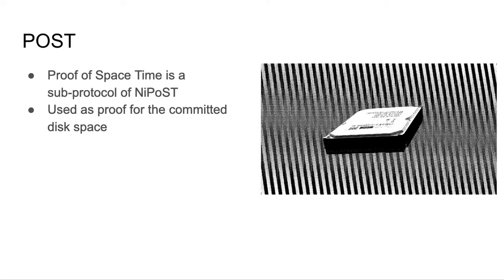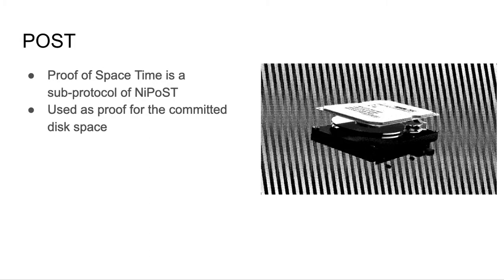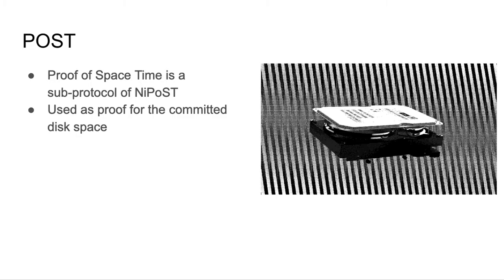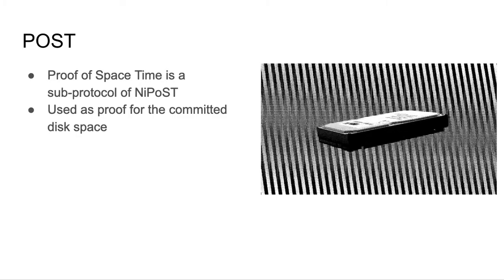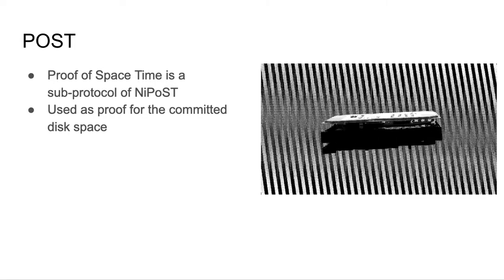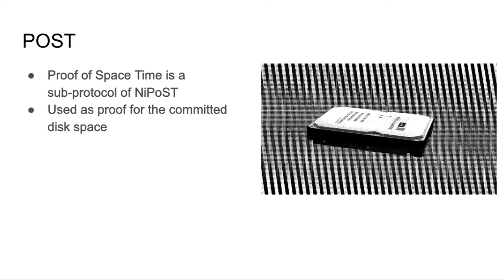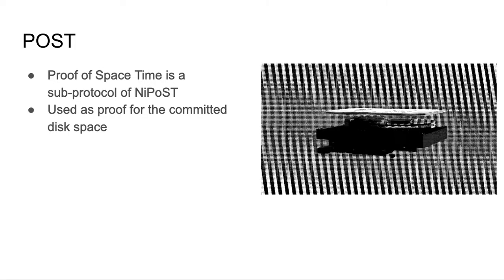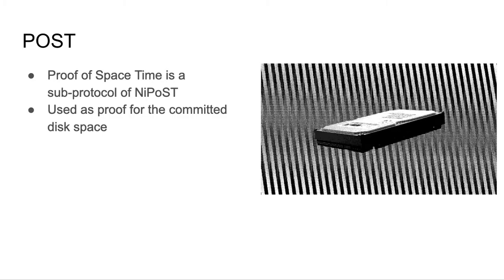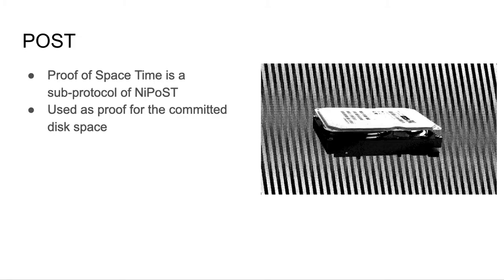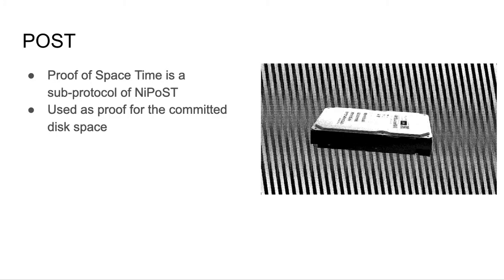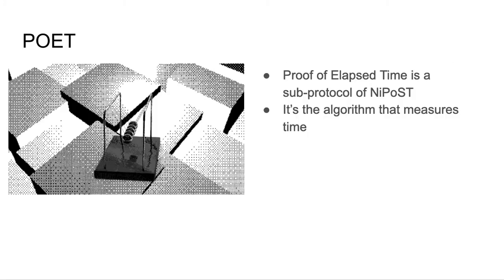Proof of space time is a sub-protocol of NIPOST. It is the algorithm that proves that the committed disk space was used for the SpaceMesh protocol. The algorithm first generates unique data that occupies the committed disk space. Once the initialization phase is complete, each execution of the POS algorithm provides a proof of existence of that data. The Smesher executes the POS after each full execution of the POET algorithm.